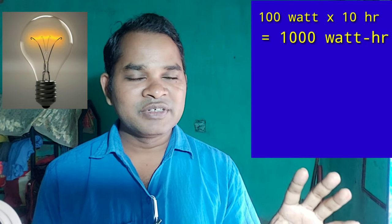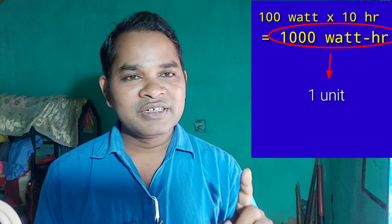For the first time, I used the machine for 10 hours. The machine is 1000W. So 1000W for 10 hours gives 1000Wh, and 1000Wh equals 1 unit. This calculation is done with a unit.